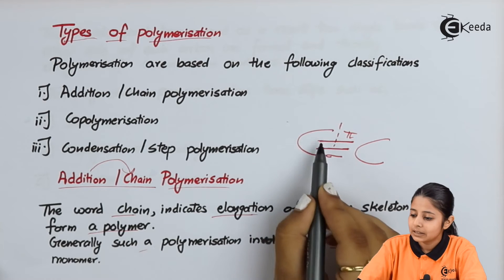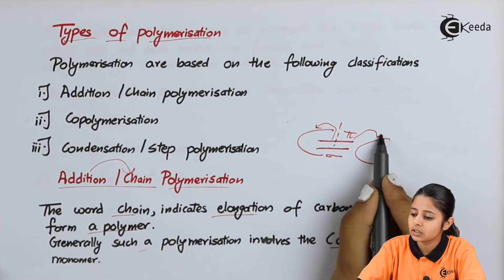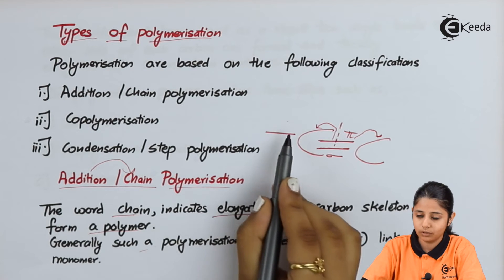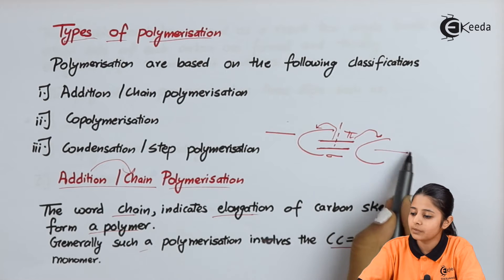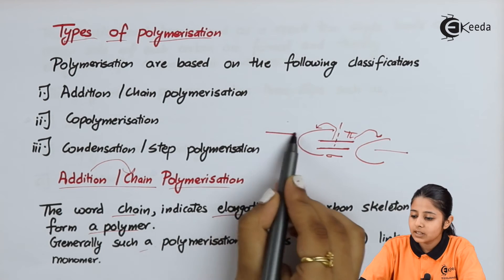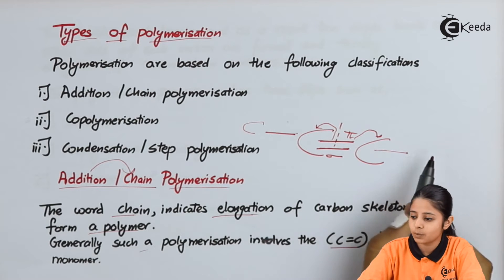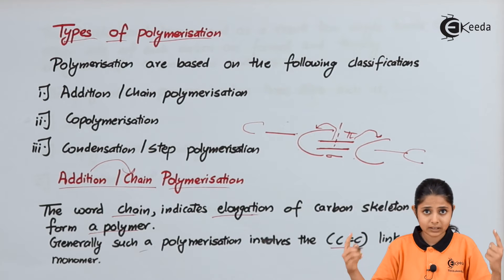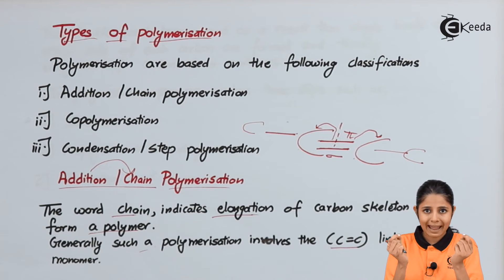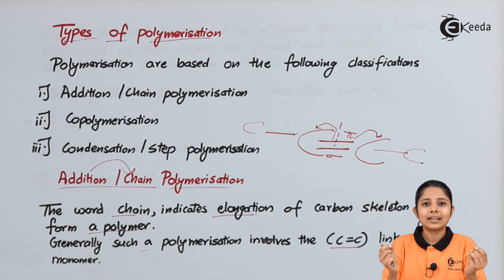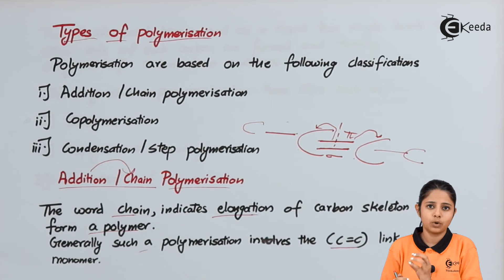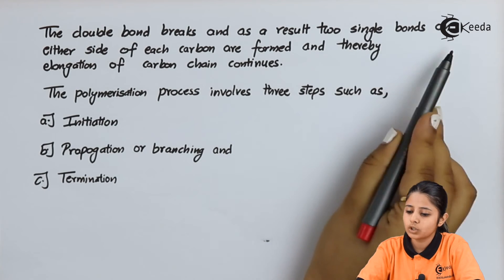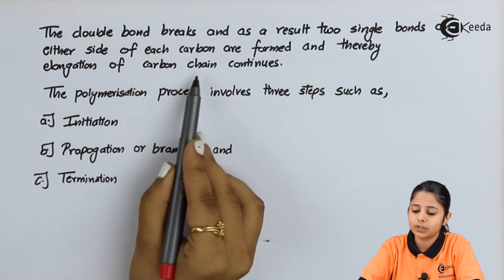Once this pi bond is broken, each carbon gets its bond back and has an active or reactive position. With these bonds, we can attach more carbons — from two carbons we can have four, then six, eight, ten, twelve and so on. We are adding more carbons and making a chain, which is why this is called addition or chain polymerization. The double bond breaks and two single bonds on either side of the carbon are formed, thereby allowing the elongation of the carbon chain to continue.